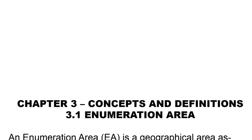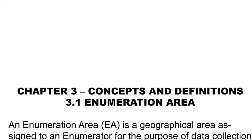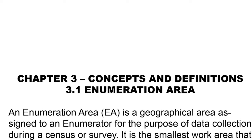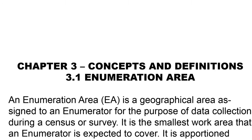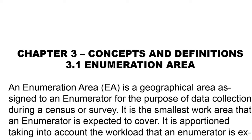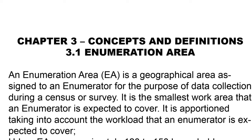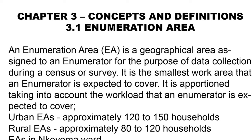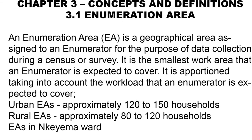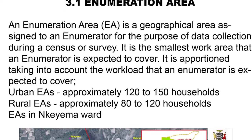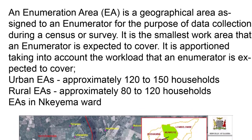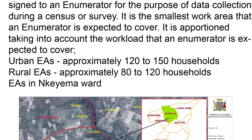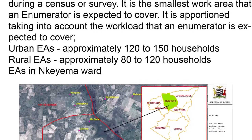Zambia 2021 Census: Everyone Counts, Chapter 3 — Concepts and Definitions. An enumeration area, also known as EA, is a geographical area assigned to an enumerator for the purpose of data collection during a census or survey. It is the smallest work area that an enumerator is expected to cover.